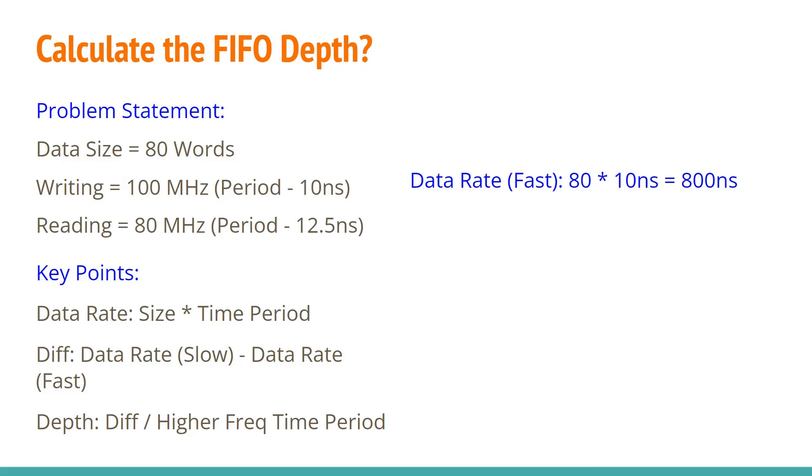So now let's look at the data rate fast data rate. So we have 80 words and every word will take 10 nanoseconds to be transmitted. So at the fast data rate, the transmitter is going to transmit 80 words in 800 nanoseconds.